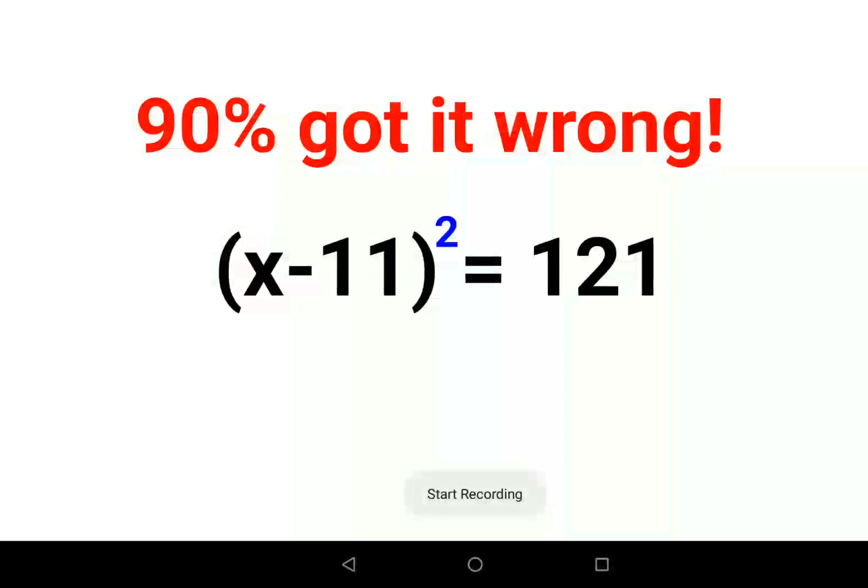Welcome everyone. So today we are going to understand how to solve this kind of a question. Whenever you have a variable which is raised to 2 and this is equal to some value, instead of getting rid of this square what we can do is take the square root on both sides.